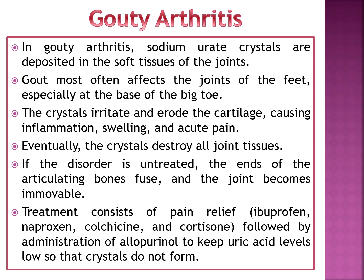In gouty arthritis, sodium urate crystals are deposited in the soft tissues of the joints. Gout most often affects the joints of the feet, especially at the base of the big toe. The crystals irritate and erode the cartilage, causing inflammation, swelling, and acute pain. Eventually the crystals destroy all joint tissues, and if untreated, the articulating bone ends fuse and the joint becomes immovable. Treatment consists of pain relief by ibuprofen, naproxen, colchicine, or cortisone, followed by administration of allopurinol to keep uric acid levels low so that crystals do not form.